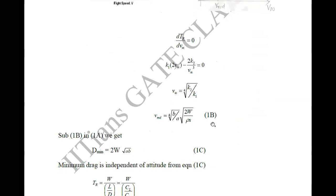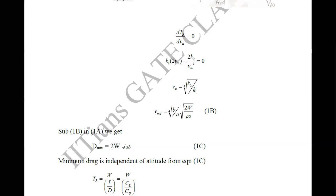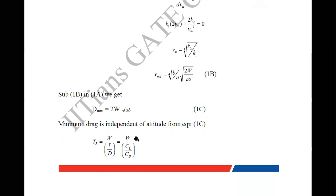Now we have obtained the velocity for minimum drag and the minimum drag value. We also need to find the aerodynamic coefficients C_L and C_D for this minimum drag condition. Taking the equation thrust required = W/(L/D) = W/(C_L/C_D). For thrust required to be minimum, C_L/C_D should be maximum, which means C_D/C_L should be minimum.